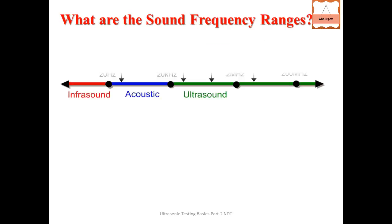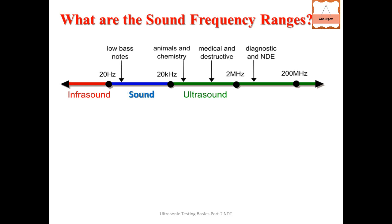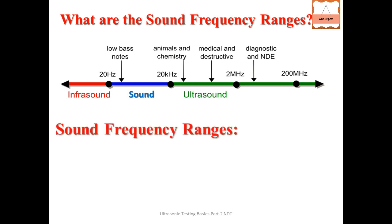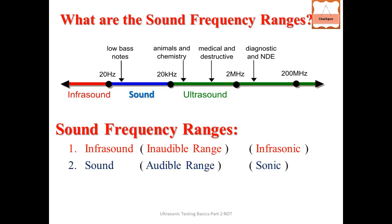What are the sound frequency ranges? In frequency ranges ko color se denote kiya hai. Red color mein infrasonic range hai jo kuch animals sun sakte hain, insaan nahi. Blue color audible ya sonic range hai jo human sun sakta hai: twenty hertz se twenty kilohertz tak.